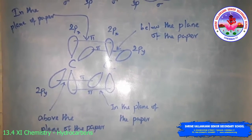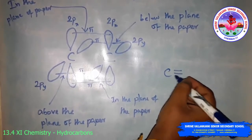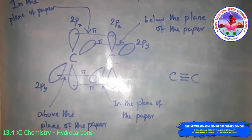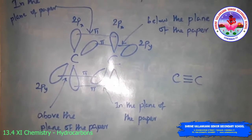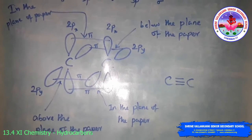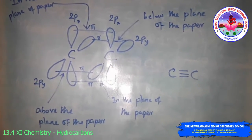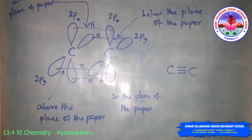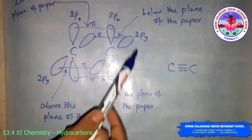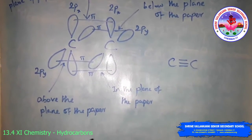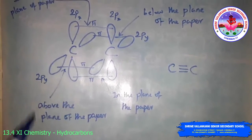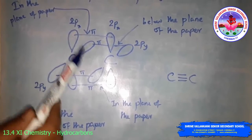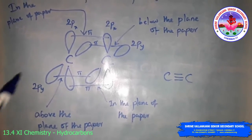The bond enthalpy of C≡C is 823 kJ/mol, which is more than that of the C=C double bond at 681 kJ/mol, and the C-C single bond at 348 kJ/mol. The bond length of C≡C triple bond is 120 picometers, C=C double bond is 133 picometers, and C-C single bond is 154 picometers. The electron cloud between the two carbon atoms is cylindrical and symmetrical about the internuclear axis, so the molecular structure is linear.